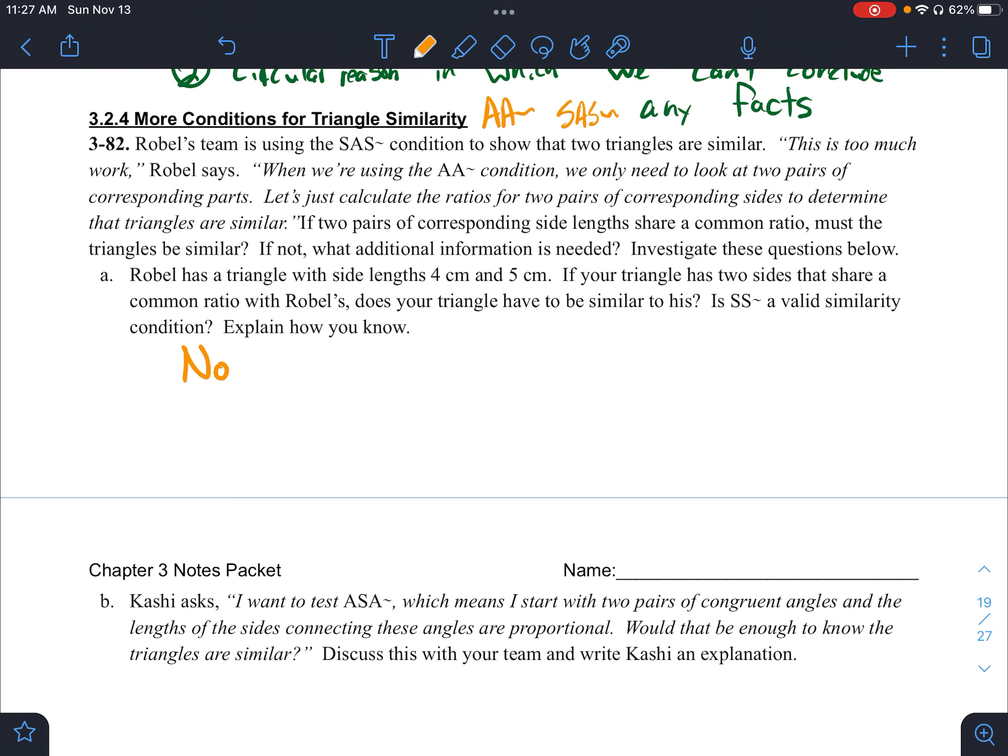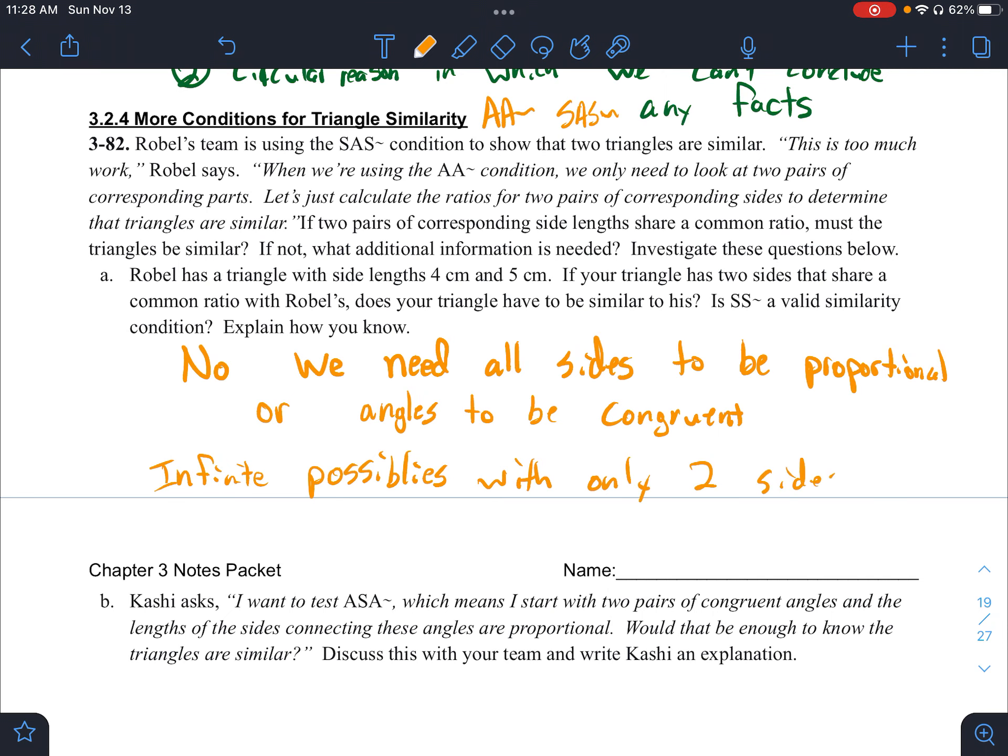This one is no. You do need to have, we need all sides to be proportional or angles to be congruent. There's actually infinite possibilities with only two sides.